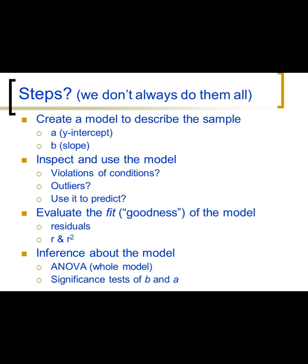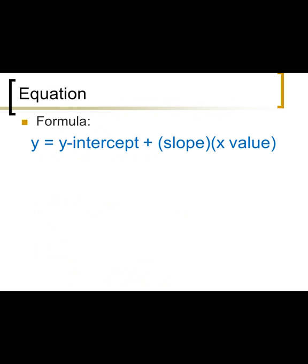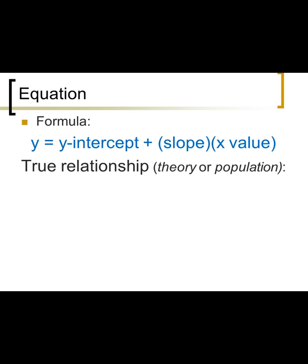We statistically test the significance of b and a. Testing b is the same as testing R or R-squared. The equation for a model is simple: the y value equals the y-intercept plus the slope times the x value. You're familiar with this as y equals mx plus b, or sometimes y equals ax plus b.